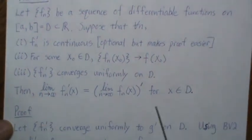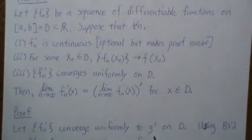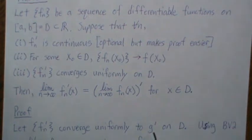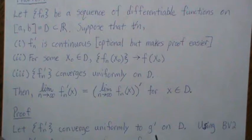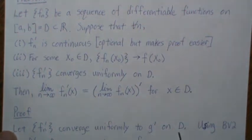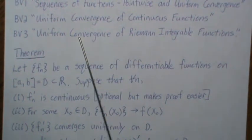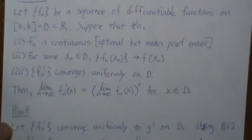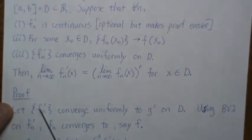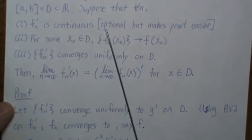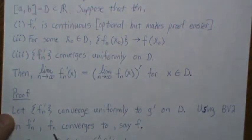So a quick little proof is: let f_n prime converge uniformly to something. So, that's part of what it says, that's a given. We're going to call it g prime on D. That's what it converges to. Now using background video two, uniform convergence of continuous functions on f_n prime. Remember, that was condition one that we said was optional, but it makes the proof a little bit easier.